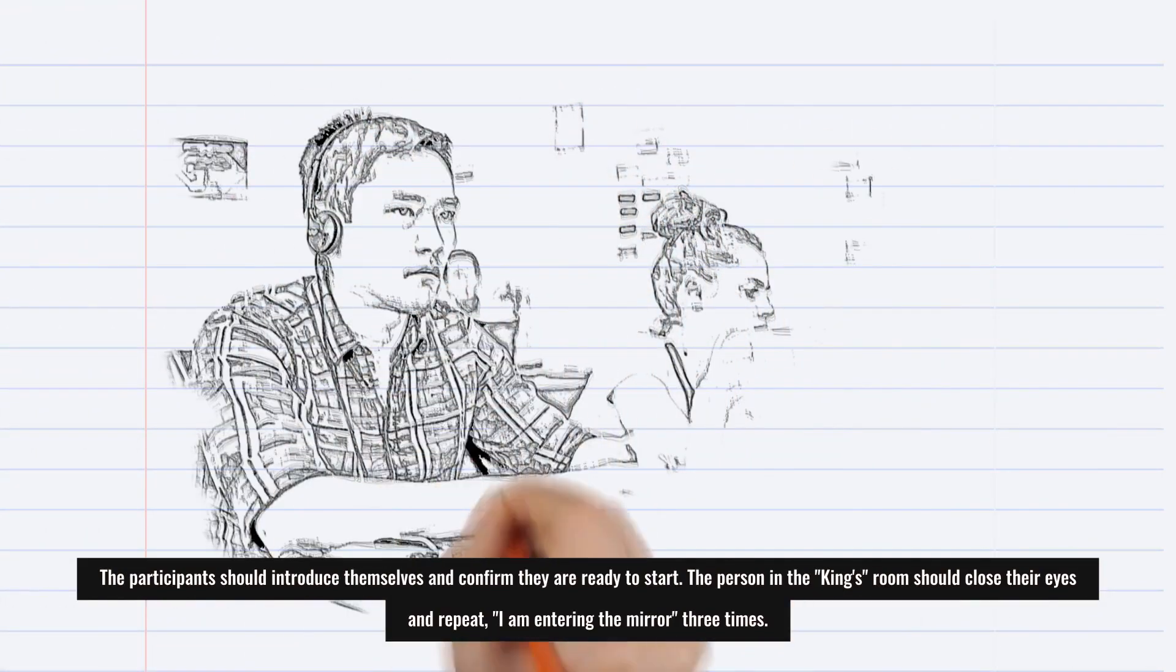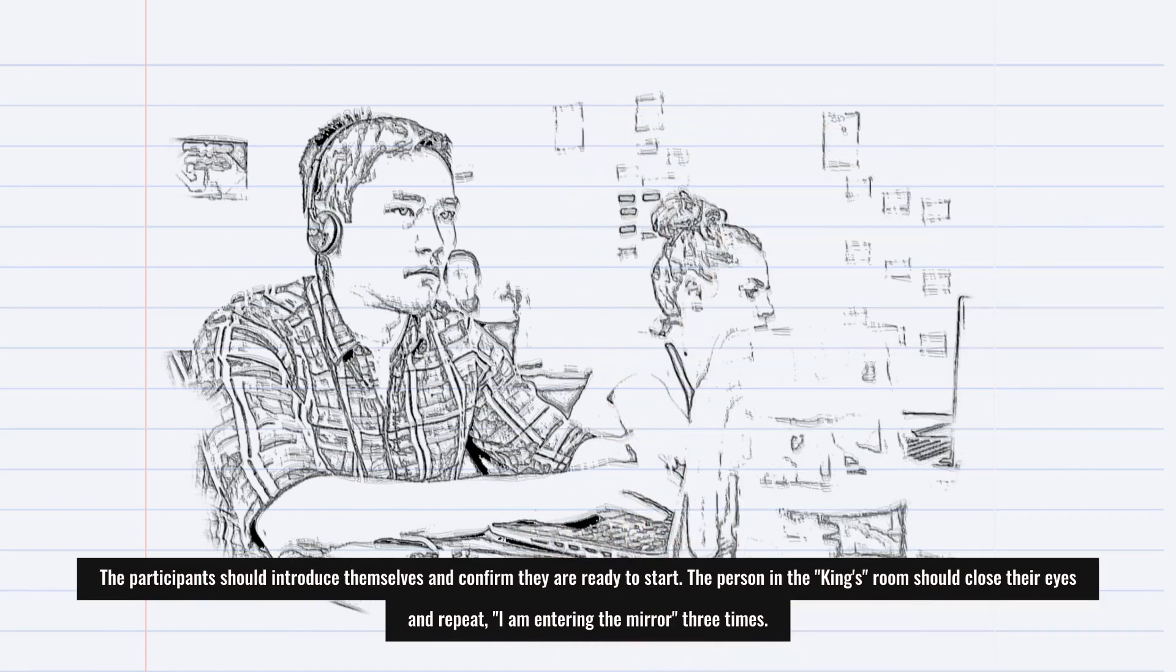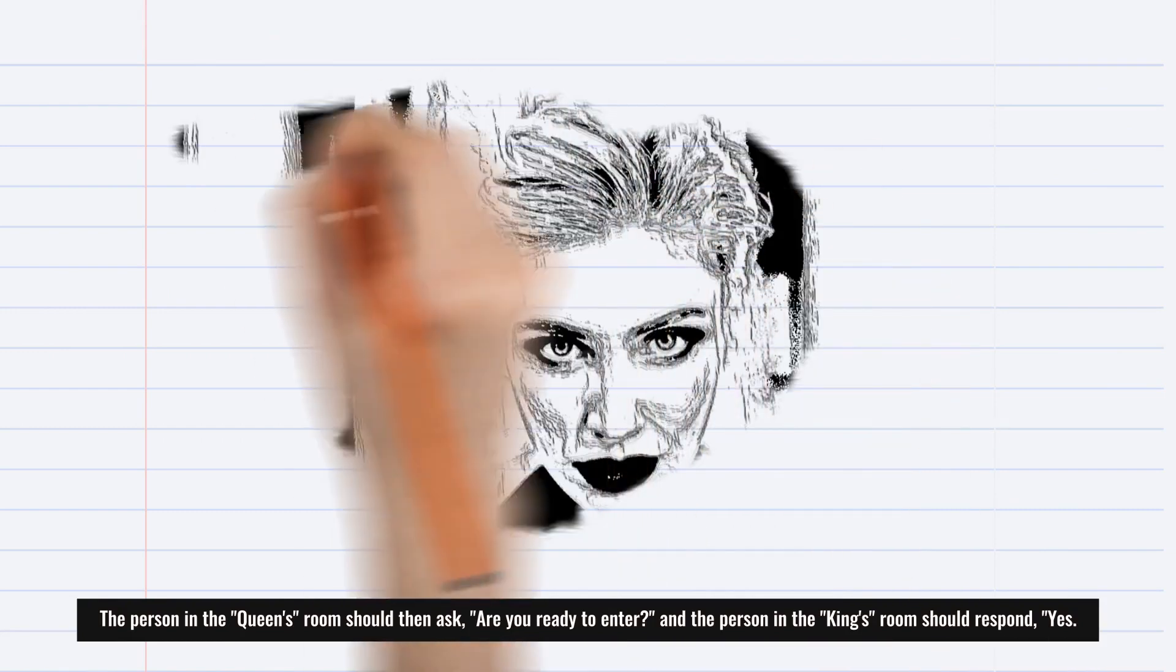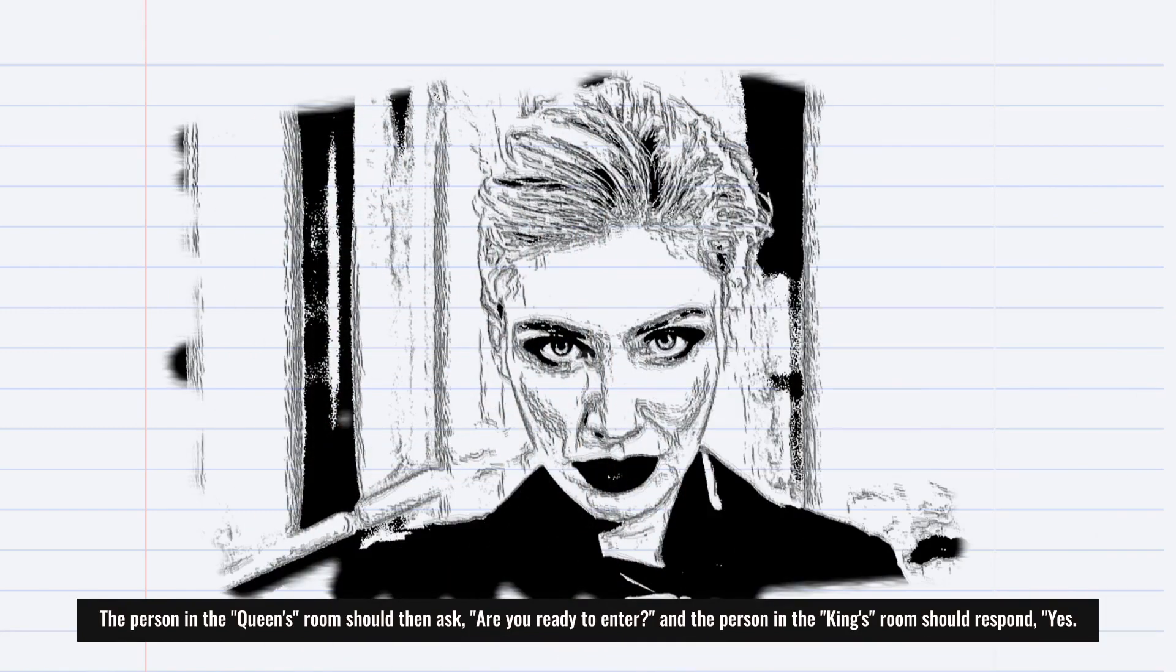The person in the king's room should close their eyes and repeat 'I am entering the mirror' three times. The person in the queen's room should then ask, 'Are you ready to enter?' And the person in the king's room should respond, 'Yes.'